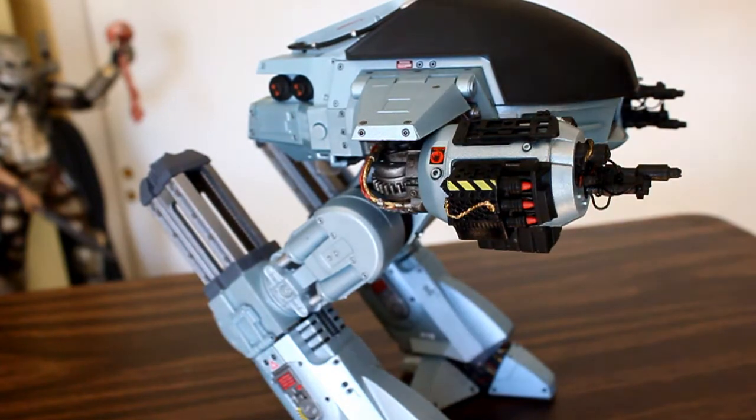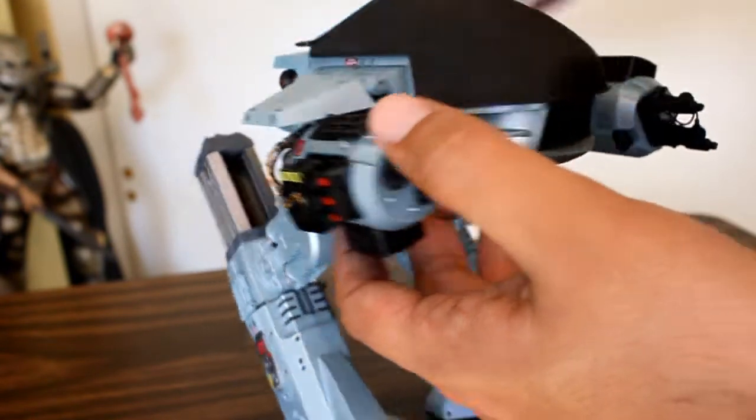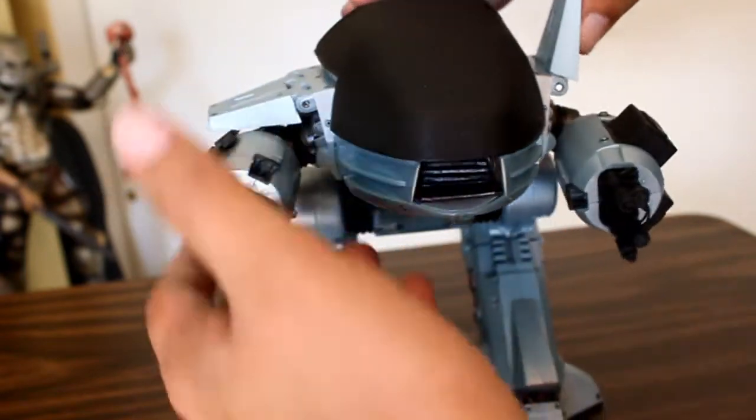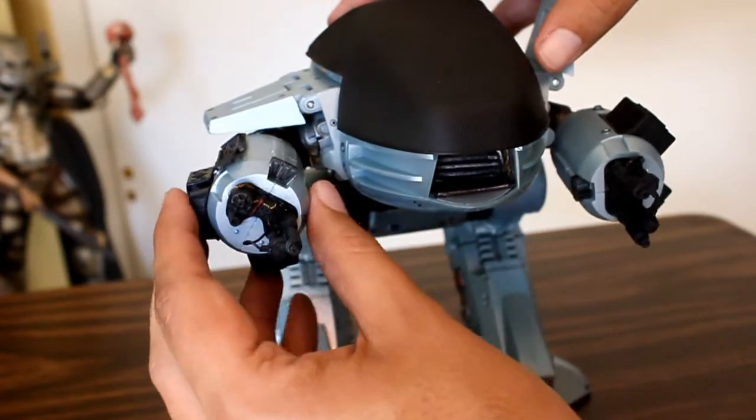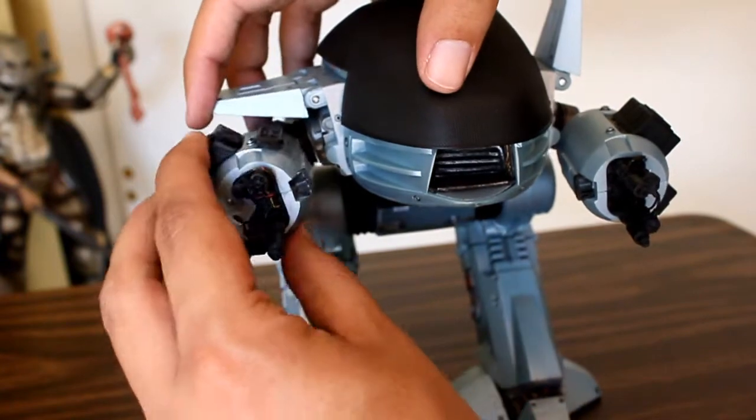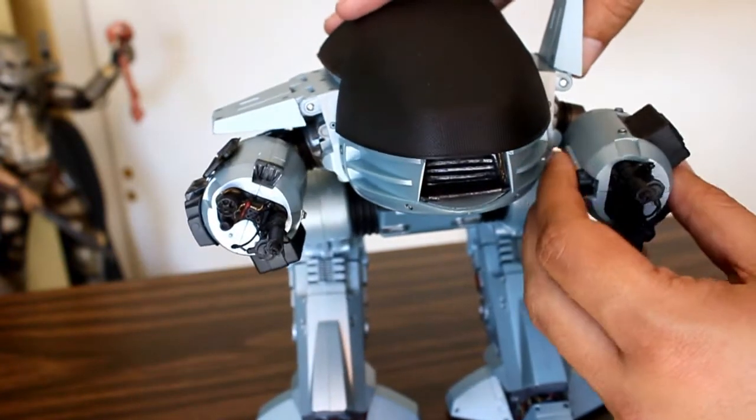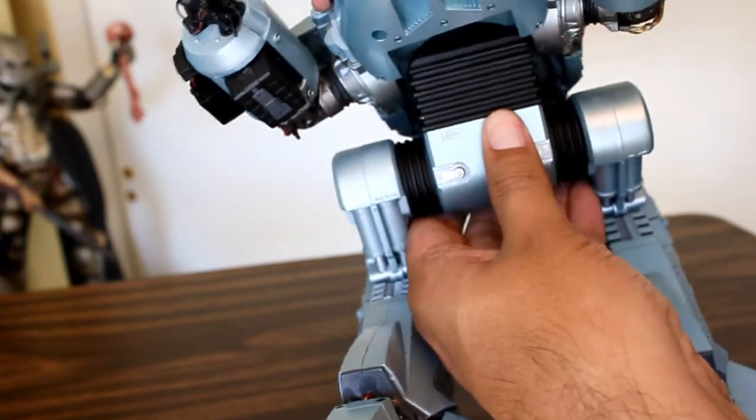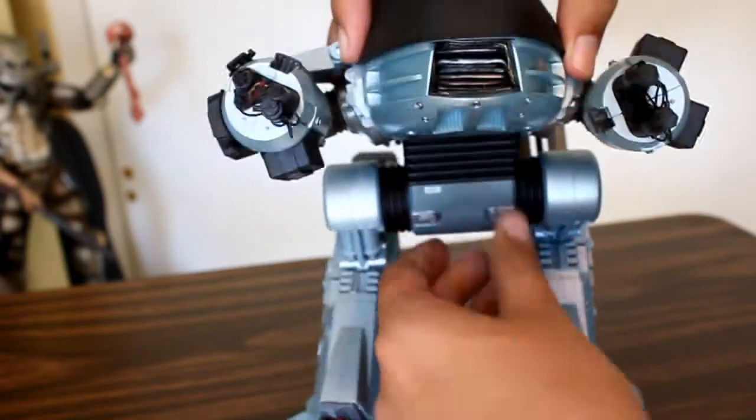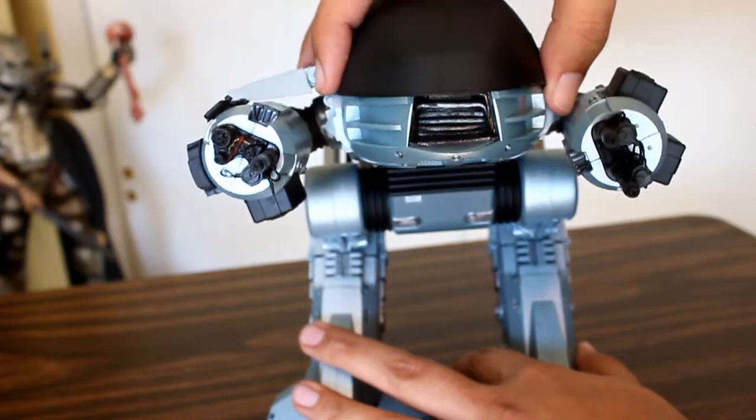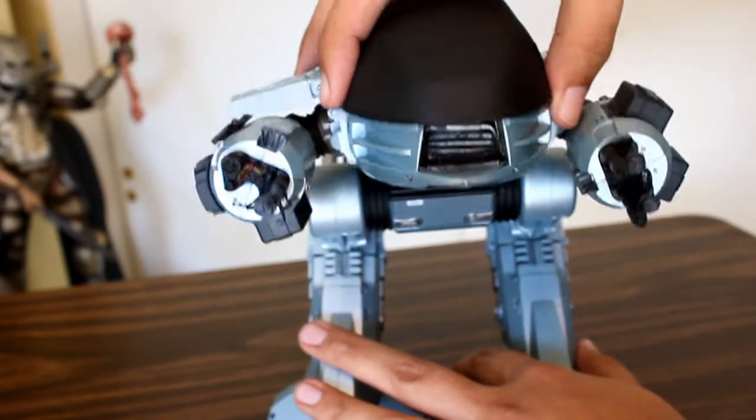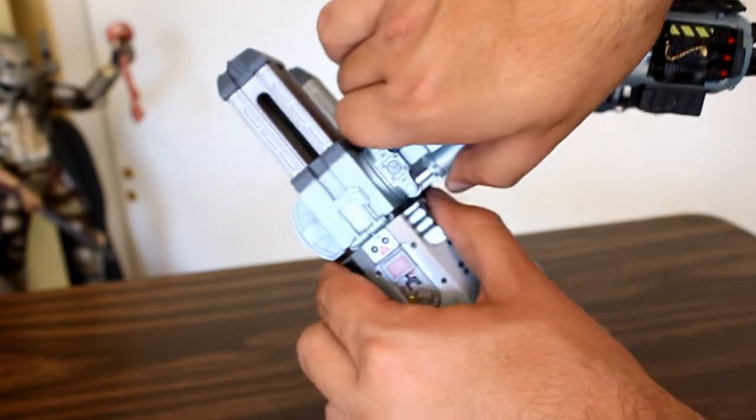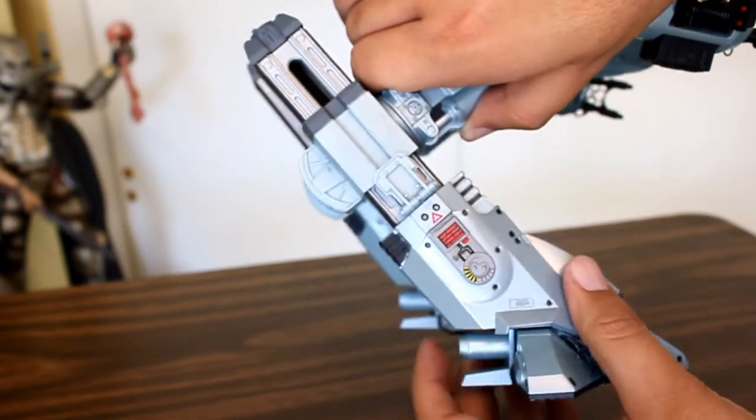Now, articulation on this thing is pretty damn strong. You've got these flaps that lift up on the side here, along with arm rotation that goes up and down. You've also got these that rotate side to side. On top of that, you've got a swivel here. It rotates at the leg, up and down. Lastly, the legs themselves extend, so that's pretty cool.